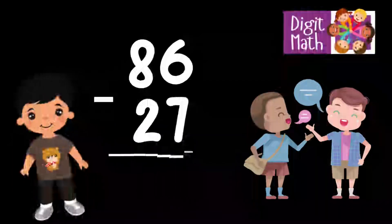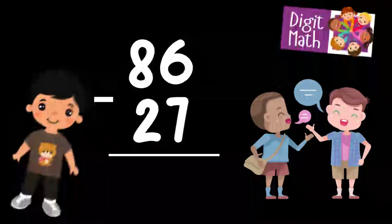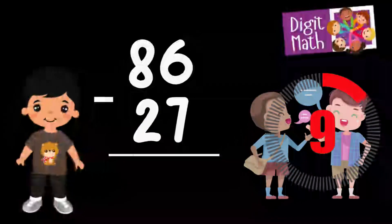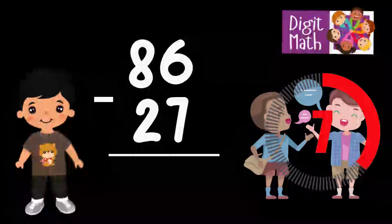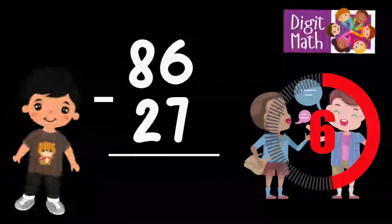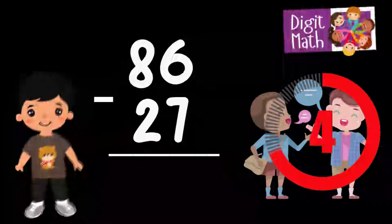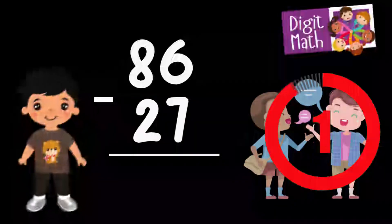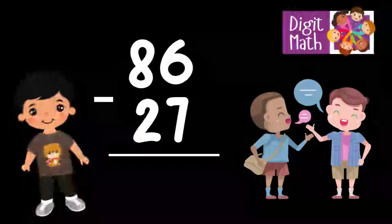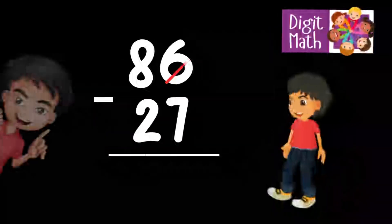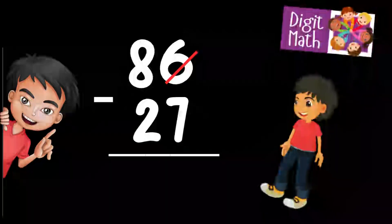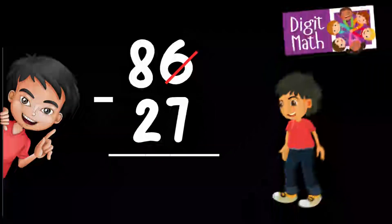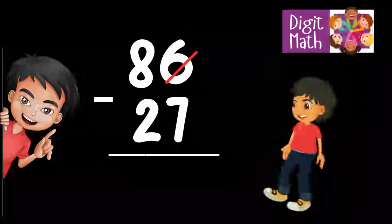86 minus 27 — time to think. In the units column, we have 6 minus 7. Since it's not possible to subtract 7 from 6, we need to borrow from the tens column.